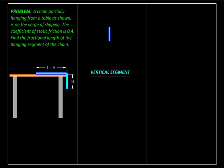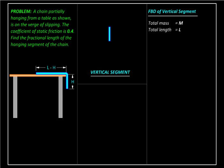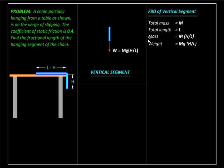We draw a free body diagram of the vertical segment. Let the total mass of the chain be M and the total length be L. The mass of the hanging part is M·H/L, and multiplying by g gives the weight of the hanging segment: Mg·H/L. This is the first force — the weight of the vertical part of the chain.